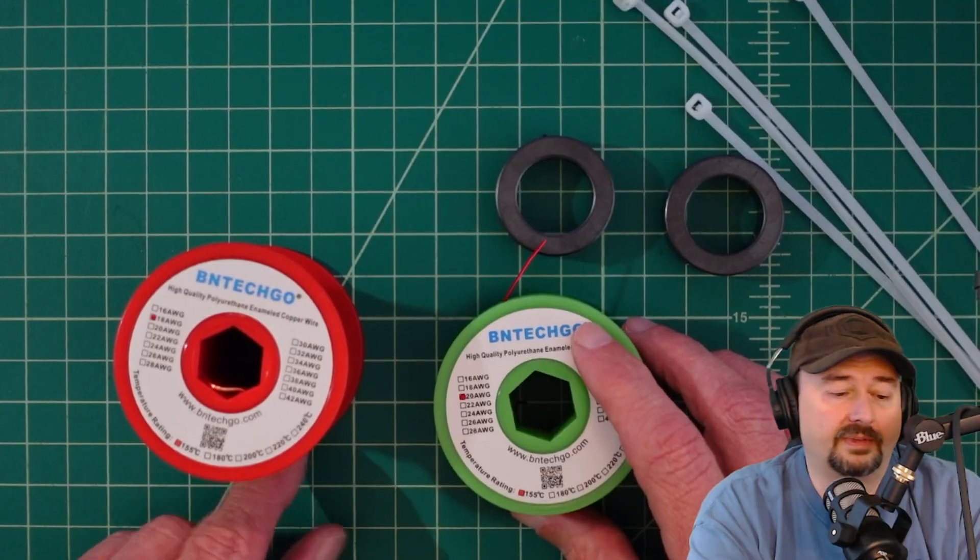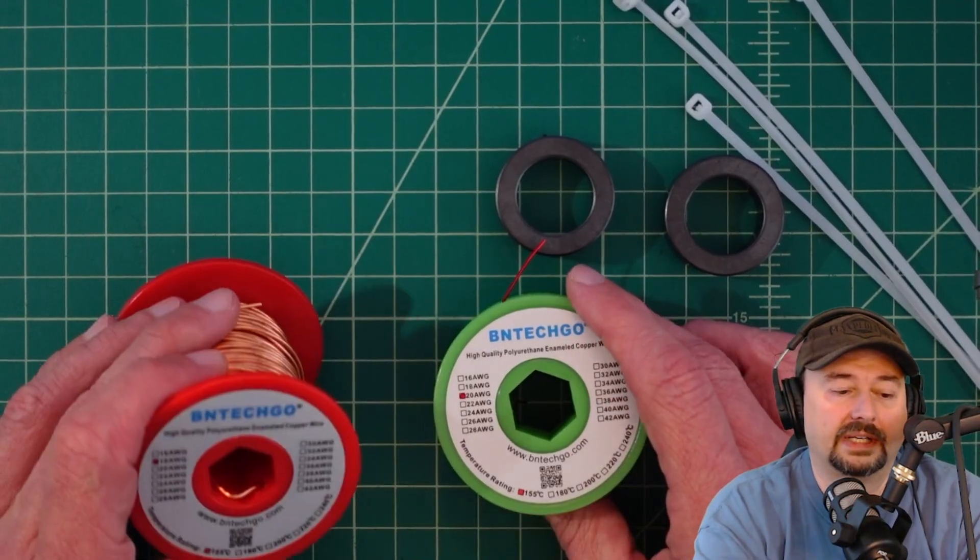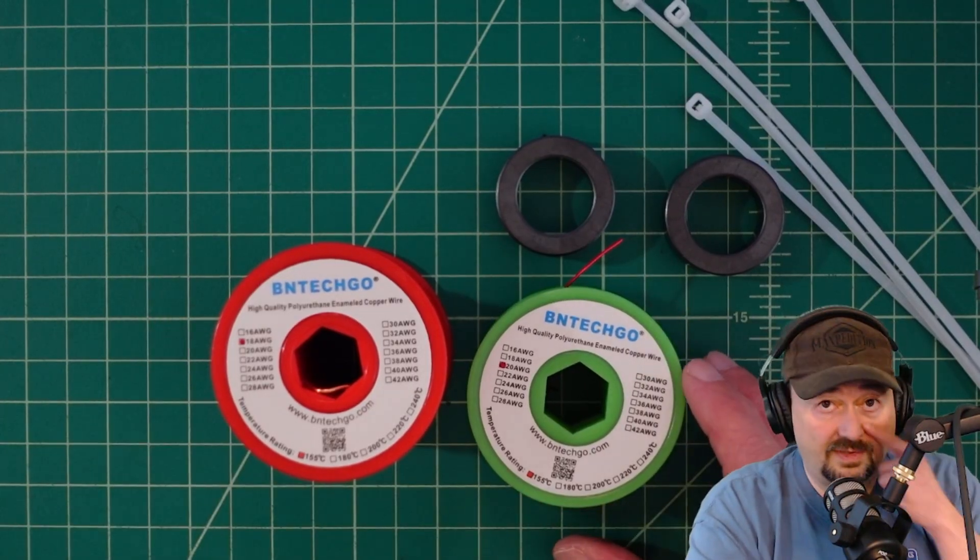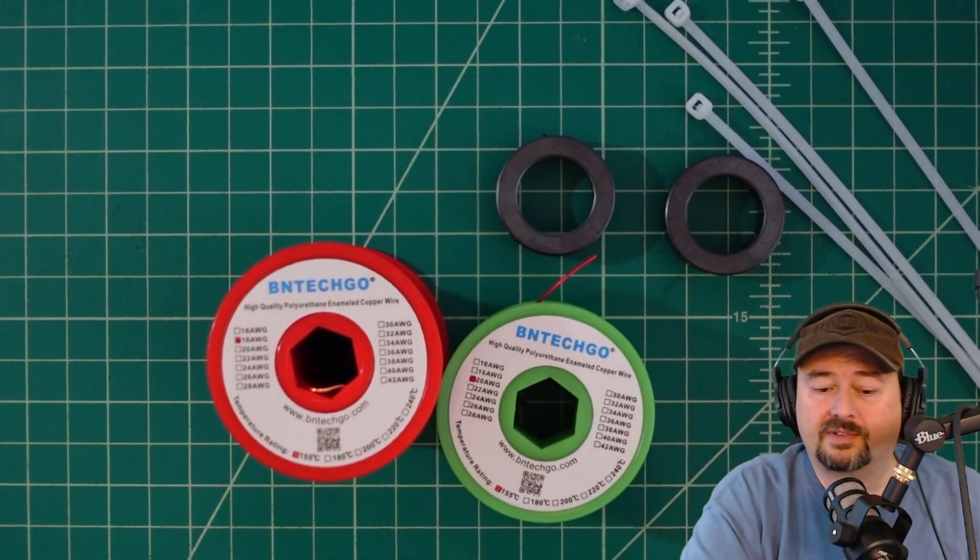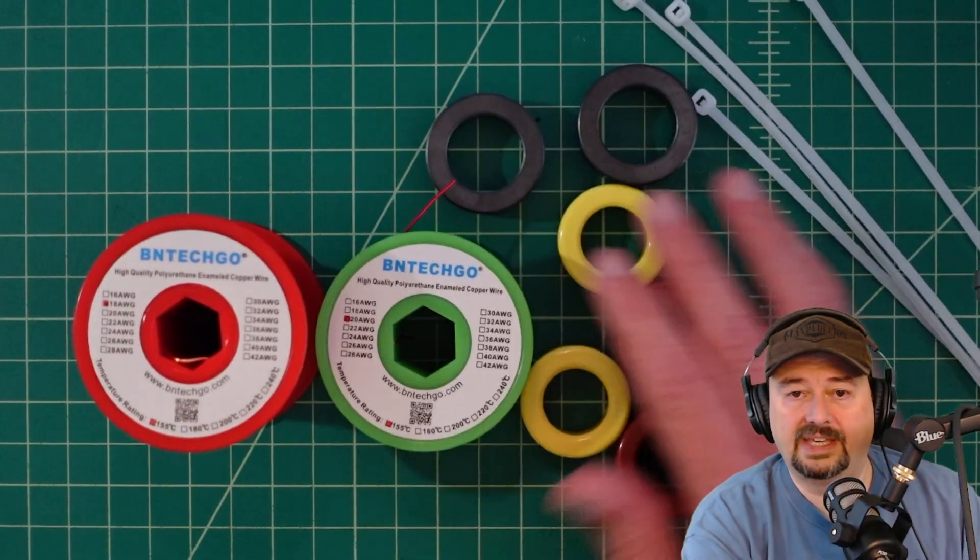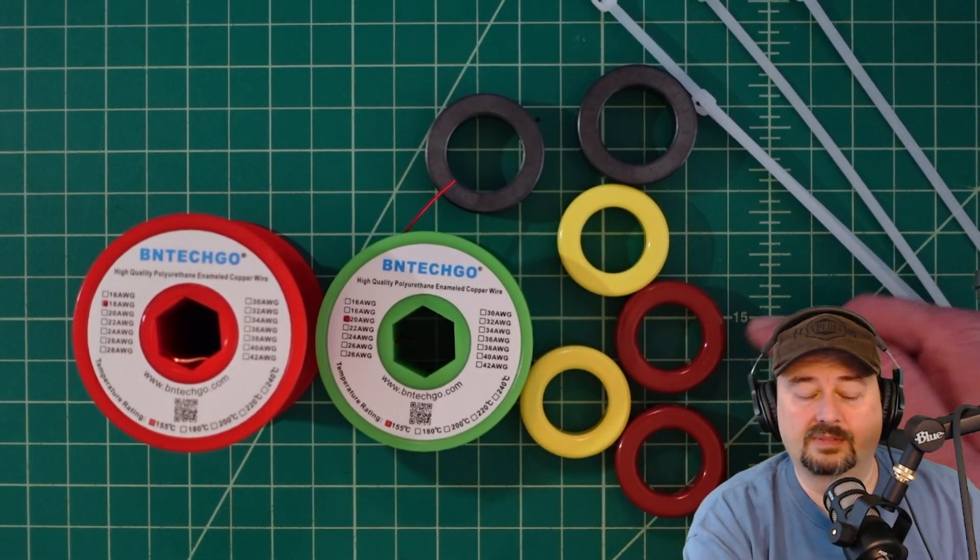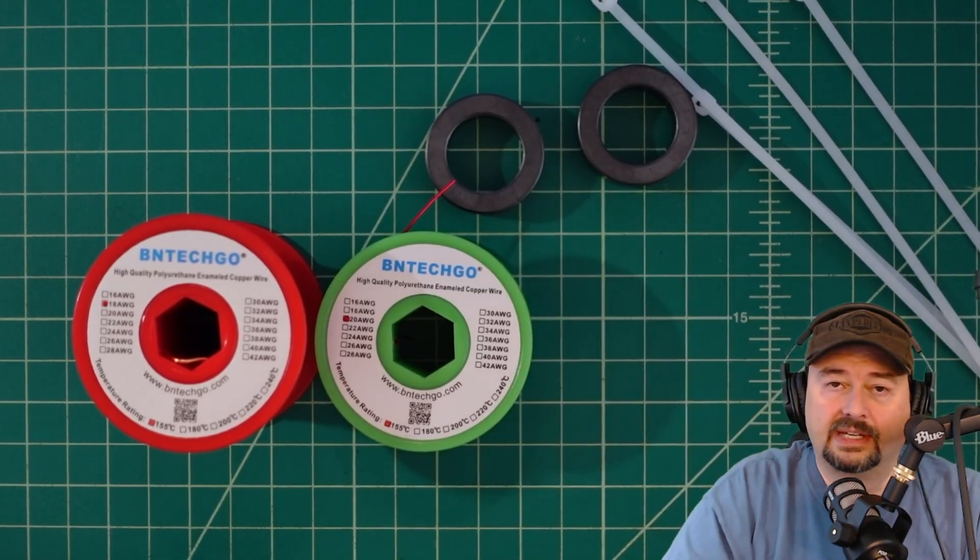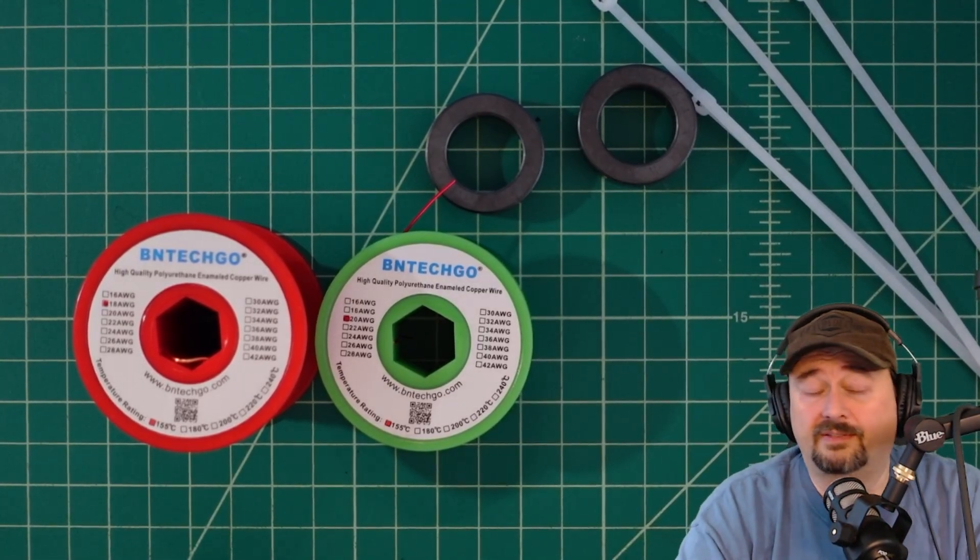Basically it's a solid core enamel coated copper wire. This is 18 gauge and I would say just use whatever you got. So that goes for the cores too. If you only have these yellow or red cores just use what you got. Test it out and see if it meets your needs.